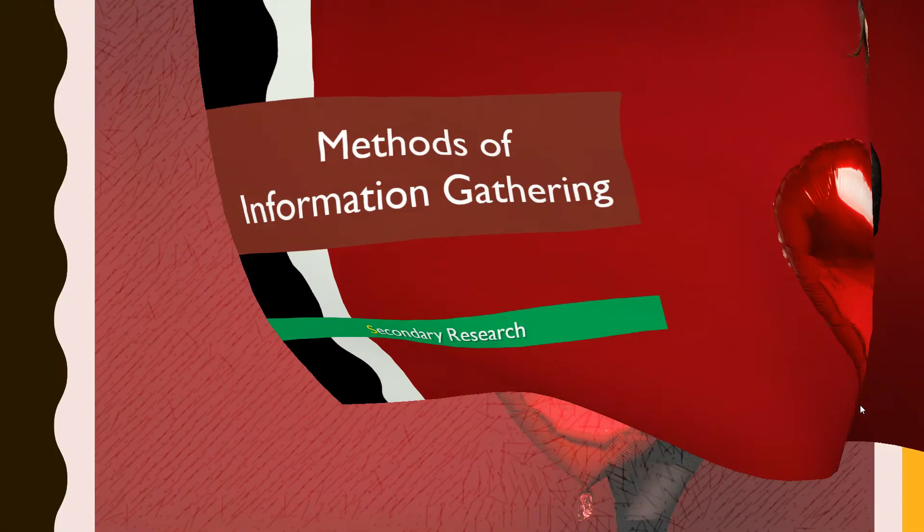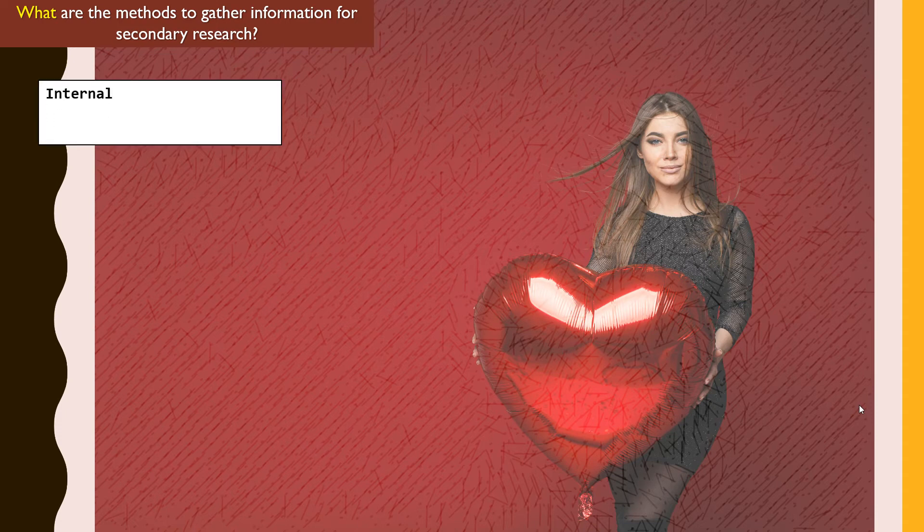So do you recall what secondary research means? It is a method of gathering information, or desk research, where you use materials that are already available — secondhand materials. These secondhand materials can come in various categories, for example through internal documents such as sales reports and management reports that a company already has.